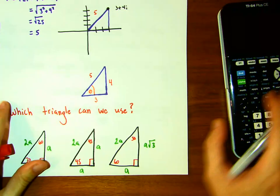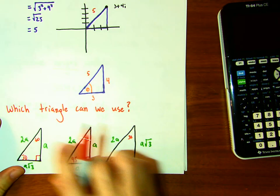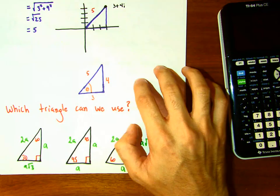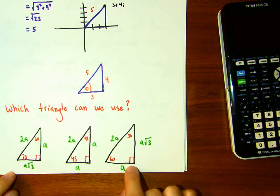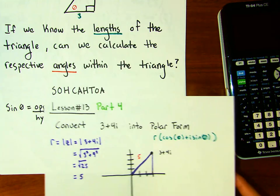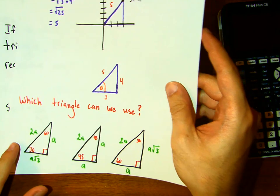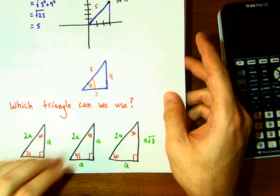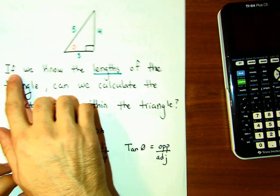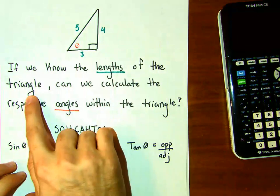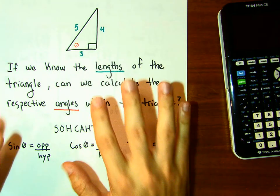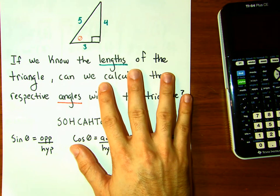The question we ask ourselves is: which triangle can we use to find that degree of rotation? We can't use any of the standard special triangles — it won't work. So we need to use something we've developed in geometry. If we know the lengths of the triangle, can we calculate the respective angles?